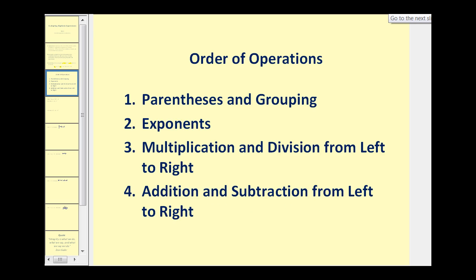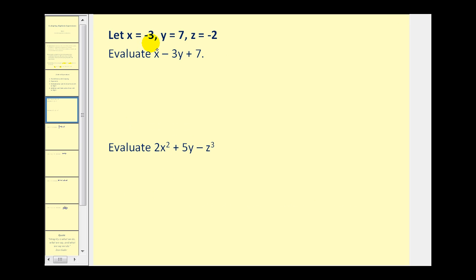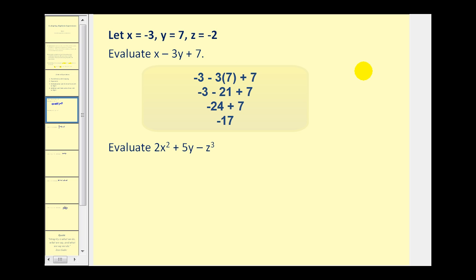Here we're given that x equals negative 3, y equals 7, and z equals negative 2, and we want to evaluate x minus 3y plus 7. We replace x with negative 3 and y with positive 7, giving us negative 3 minus 3 times 7 plus 7. Following the order of operations, we multiply first: 3 times 7 becomes 21. Then working left to right: negative 3 minus 21 is negative 24, and negative 24 plus 7 gives us negative 17.